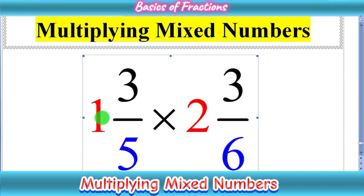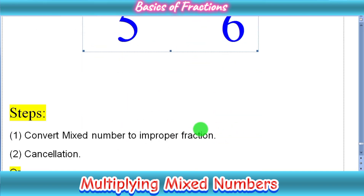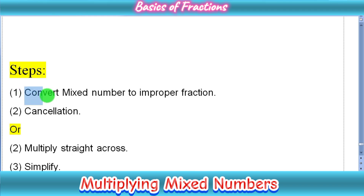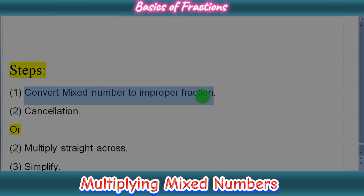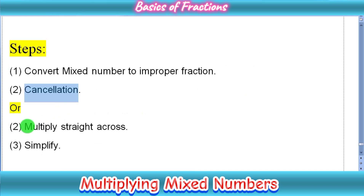So let's start. We have a very simple example here: 1 whole 3 upon 5 times 2 whole 3 upon 6. First, we recall the method. In the very first step, we have to convert all mixed numbers into improper fractions. In the second step, we can cancel out common factors or multiply straight across. In the last step, we simplify and convert back into a mixed number if necessary.